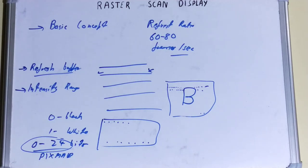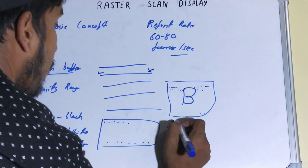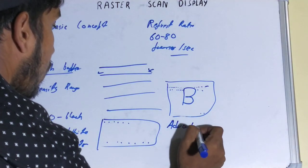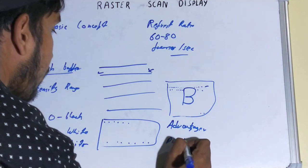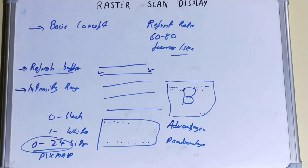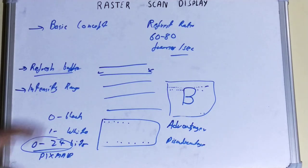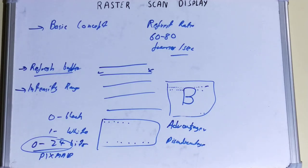Now let's talk about the advantages and disadvantages. Talking about advantages: first, we can display real-life images which have different shades — you can easily display multi-shaded real-life images with raster scan display. Second, the color range available is way bigger than random scan display, so the color range of raster scan display was much bigger than random scan display, which is why it was preferred so much.